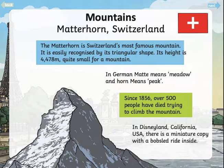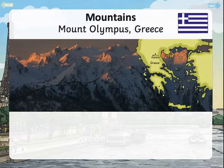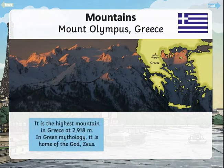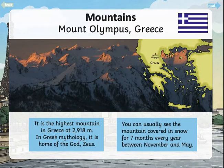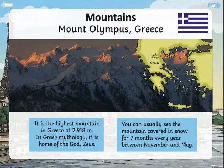In Disneyland, California, USA, there is a miniature copy with a bobsled ride inside. Here's another mountain: Mount Olympus in Greece. It is the highest mountain in Greece at 2,918 metres. In Greek mythology, it is the home of the god Zeus. You can usually see the mountain covered in snow for seven months every year, between November and May. You might choose to research a different famous mountain in Europe.